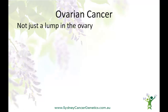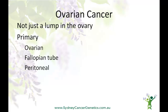It may surprise you to know that not all ovarian cancer starts in the ovary. In fact, most ovarian cancer probably starts in the fallopian tube. Although surgeons, pathologists, and oncologists still use the term 'ovarian cancer,' on the pathology report it's usually described by the tissue it's arisen from — that is, primary ovarian, primary fallopian tube, or primary peritoneal cancer.